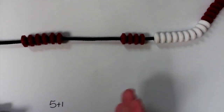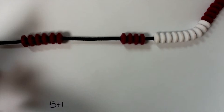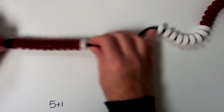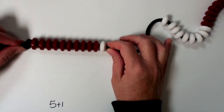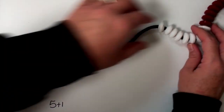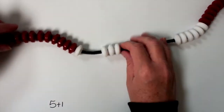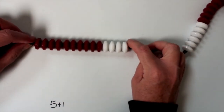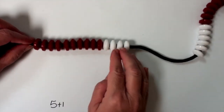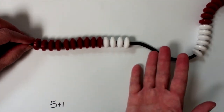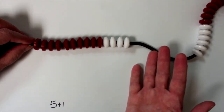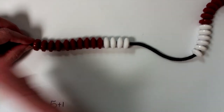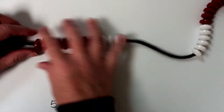So 5 plus 1 — same thing if they've got 11. They can quickly see 10 and 1 is 11, and then they can pull over 3 more. If it was 11 plus 3, they can see that is 10 and 4 more, which is 14. I want them to be able to see those kinds of things with this bead string.